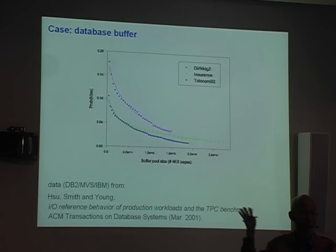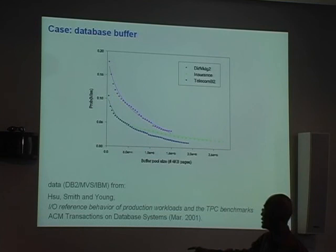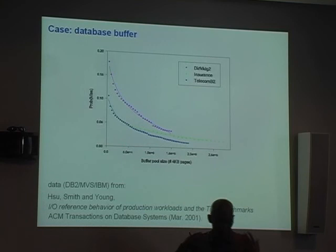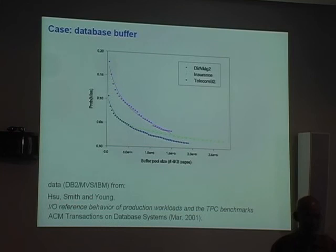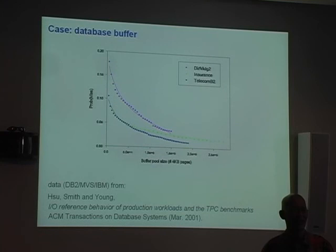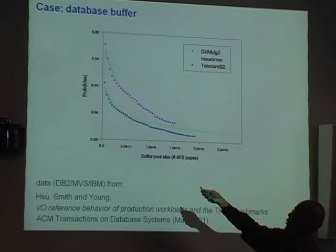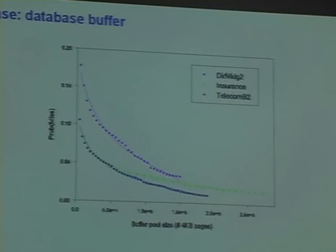In describing the intuition, I did not say anything about the reference pattern — it could have been references to a database buffer. So let's check: would it work for a database buffer? We took traces generated from real commercial workloads. These guys had access to IBM's database machines with about 12 traces from huge companies — things like AT&T and IBM's own workloads. We did a simulation and checked whether the equation would fit their data. It seems to fit very well.